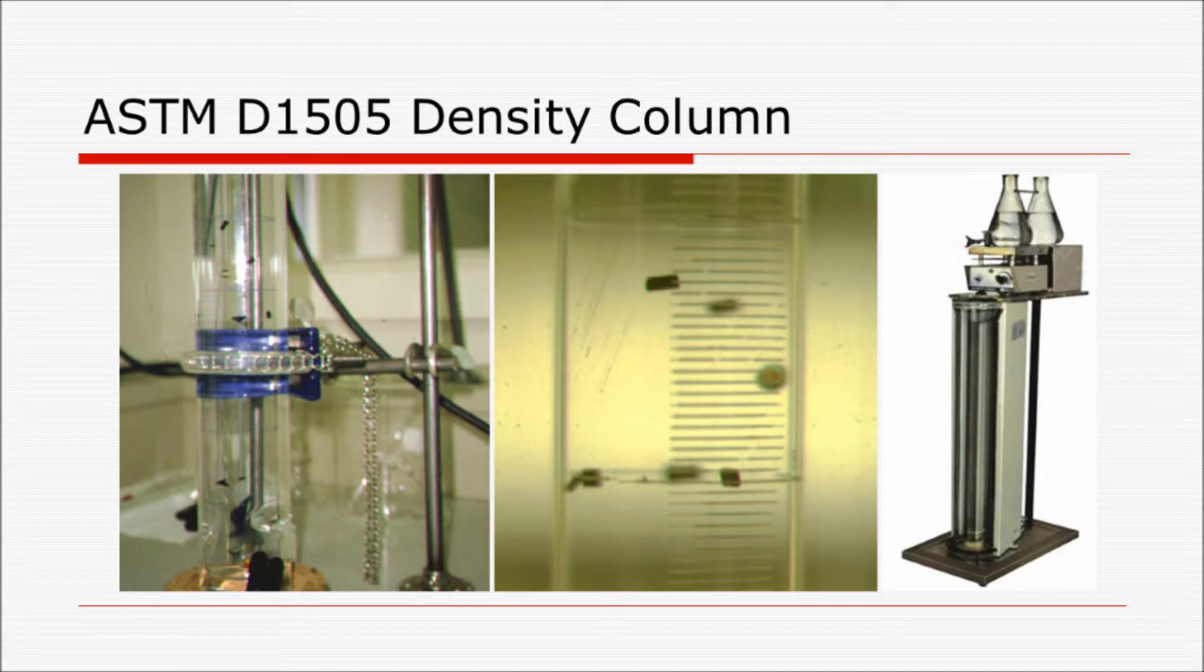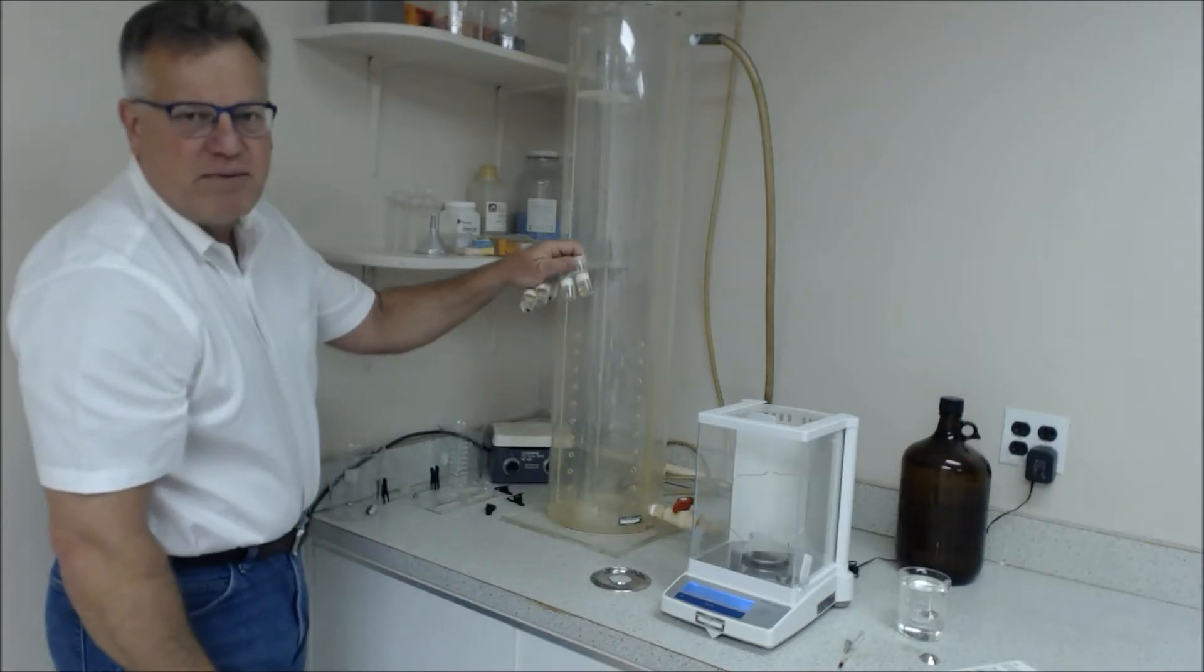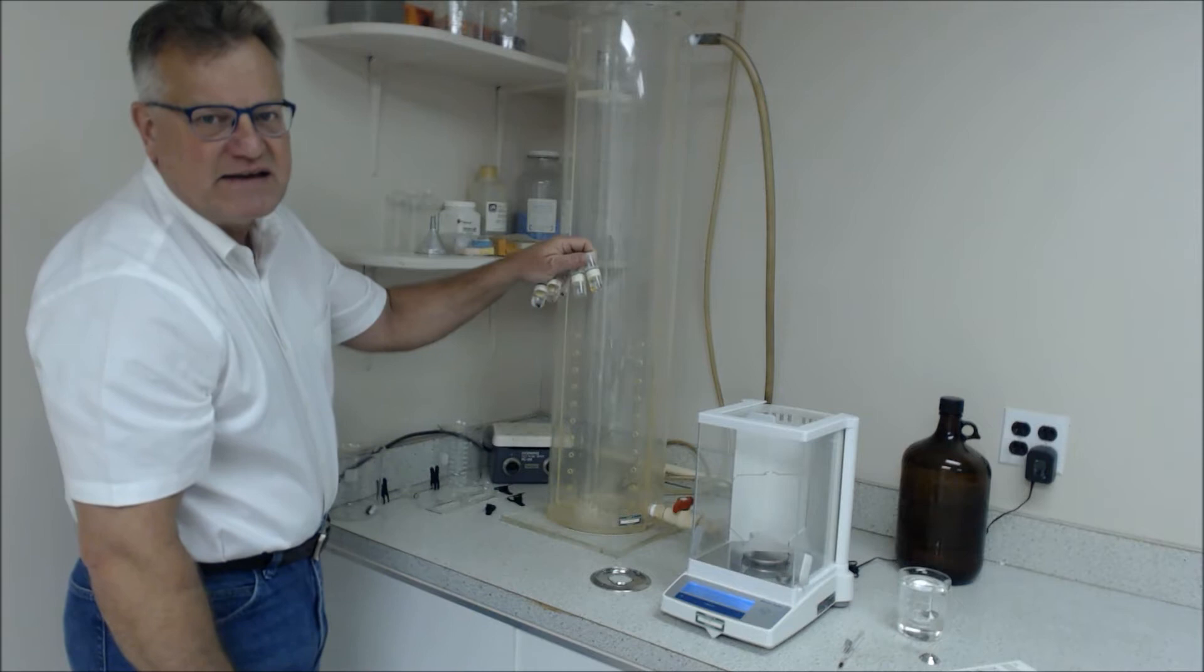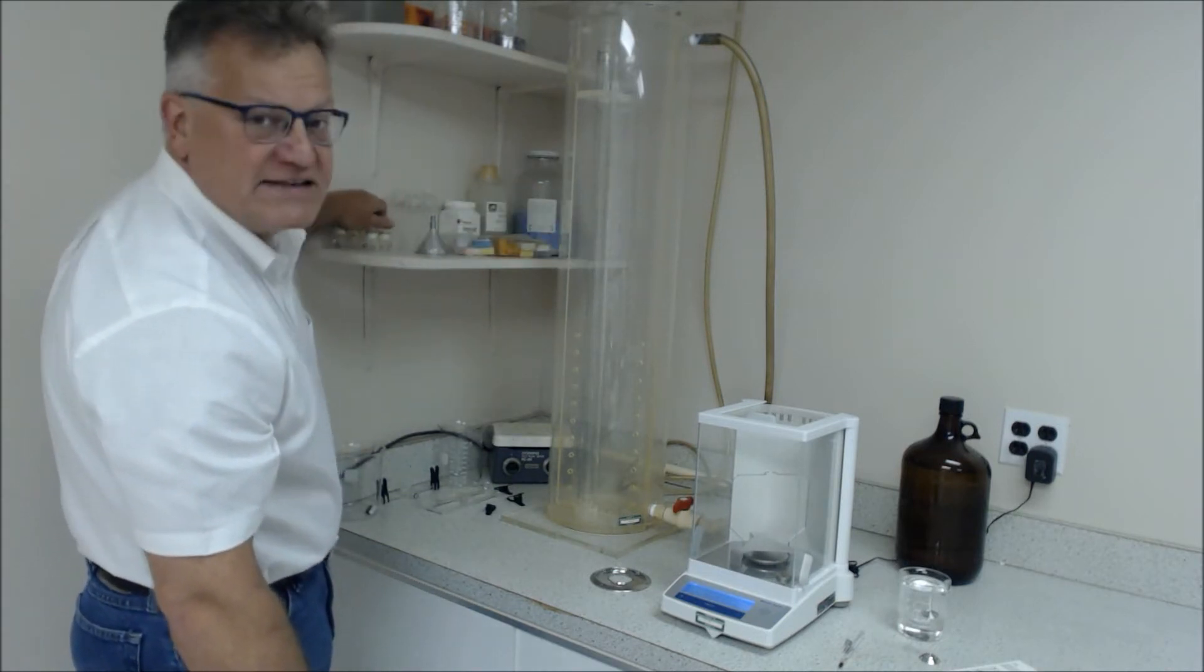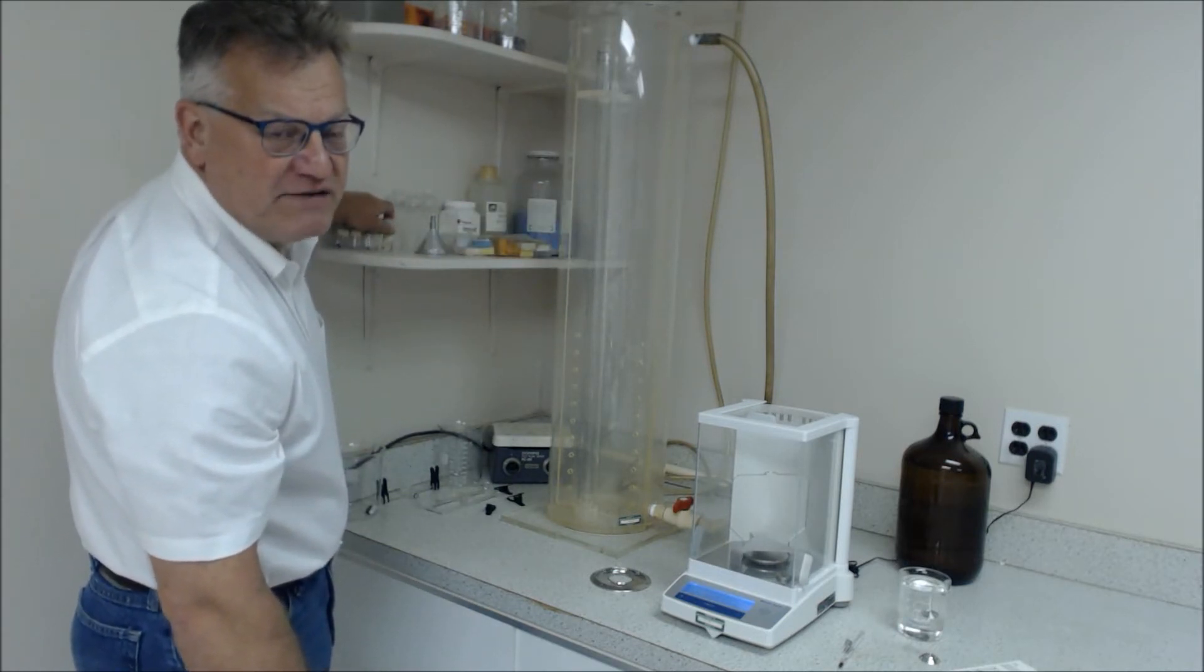We subsequently will take pieces of geomembrane, throw them into the column, and where they reside in the column with respect to the balls, we can calculate the density. This is density column, ASTM D1505.